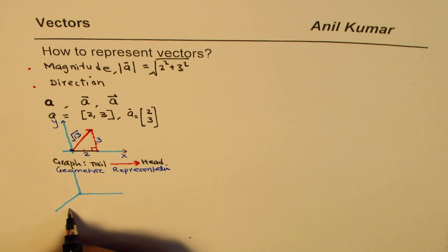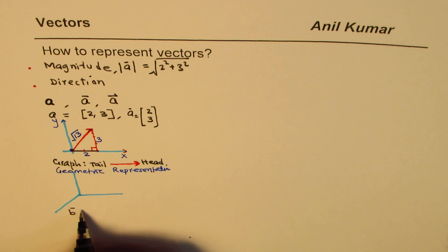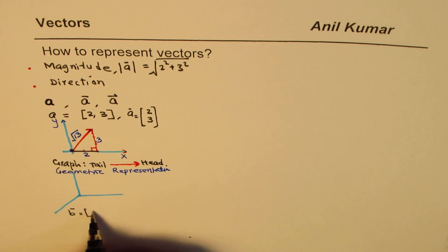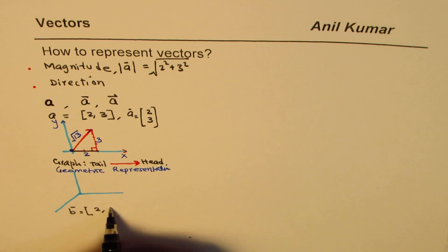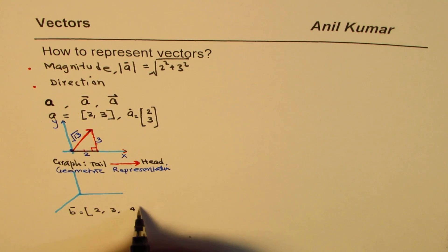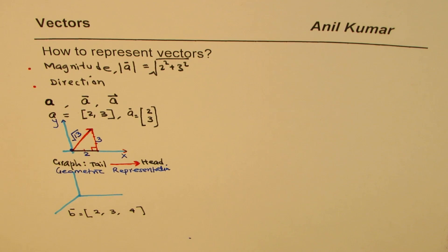Now let's take another vector b in R3. Let's say this vector is (2, 3, 4) — 2 units in one direction, 3 units in another, and 4 in the third. Easy, right? Let's see how to represent this vector in R3.